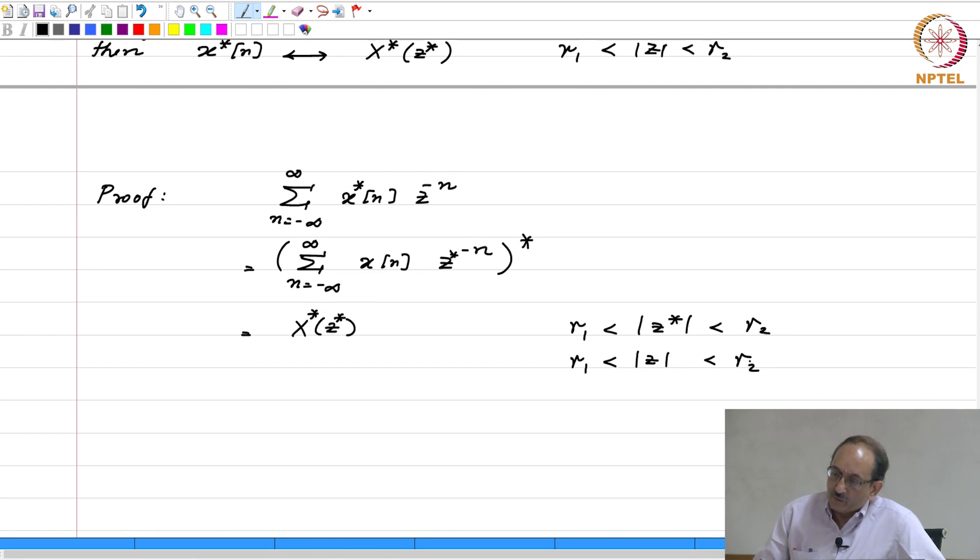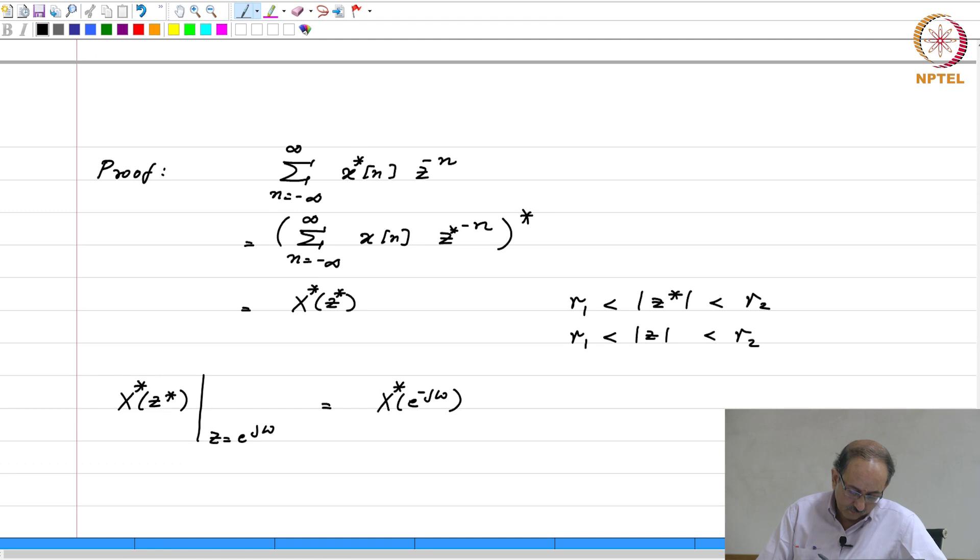And the DTFT property is very simple. If you have X of z star and if you replace z by e to the j omega, you get X of e to the minus j omega. But really, you want X star of z star, therefore you have this. Therefore, this implies that X star of n has DTFT X star of e to the minus j omega.